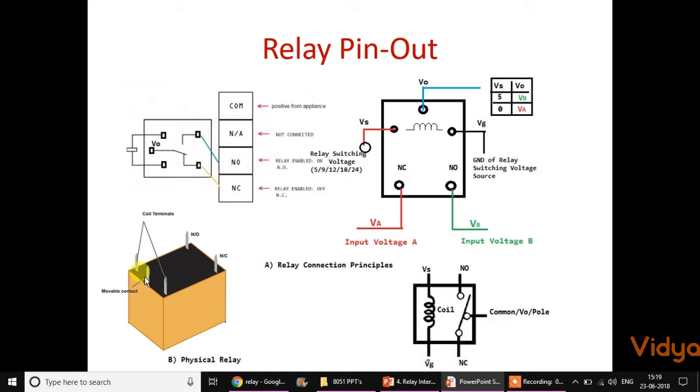Out of those five, there are three pins. The end two points are coil terminals or L1 and L2, and then there are three points: one is a movable contact which is also called common, another one is NO and NC.